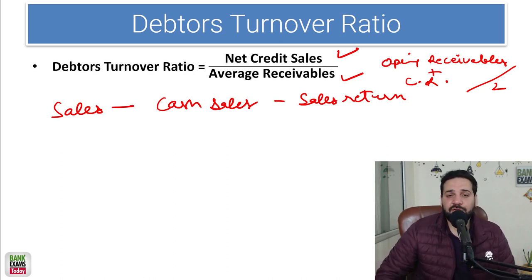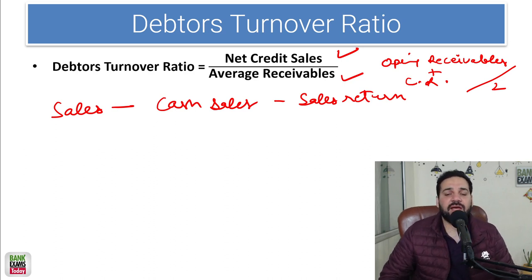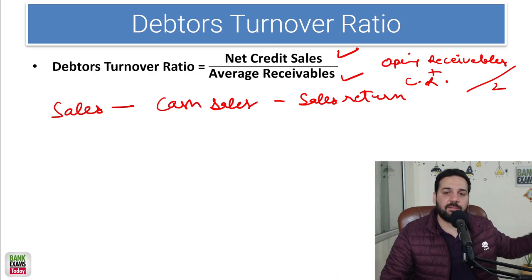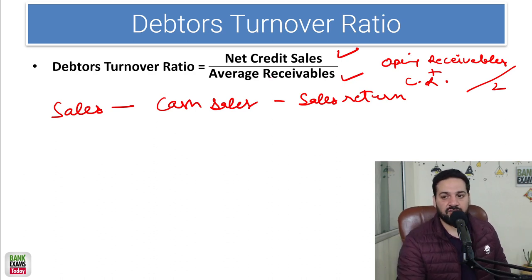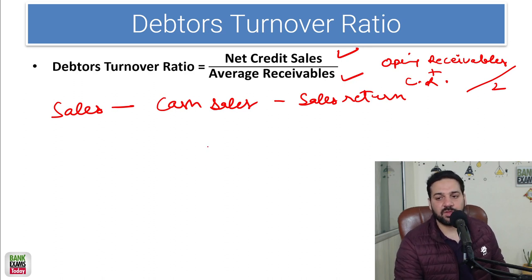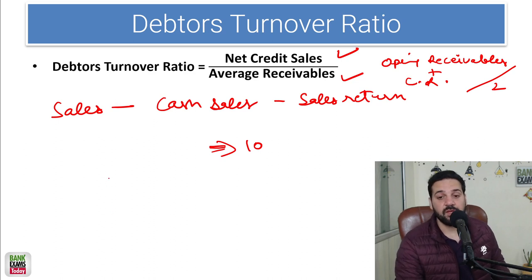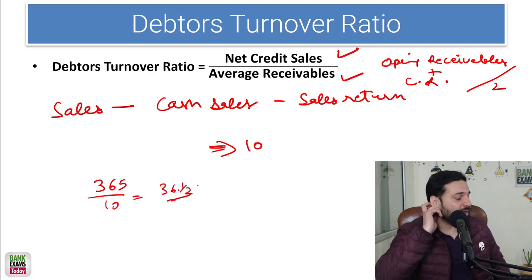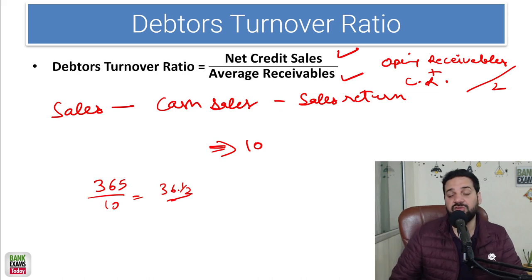What is the collection period? On average, in how many days do you collect money from debtors? If the debtor turnover ratio is 10, and the total number of days in a year is 365, then 365 divided by 10 gives 36.5 days — that is your collection period. You can count it as 37 as well.